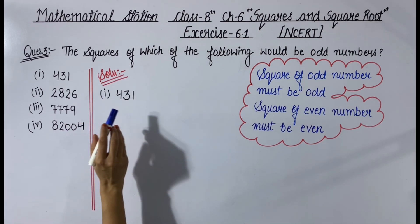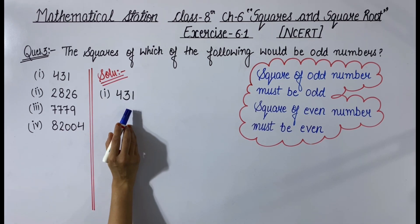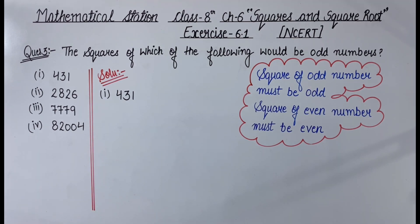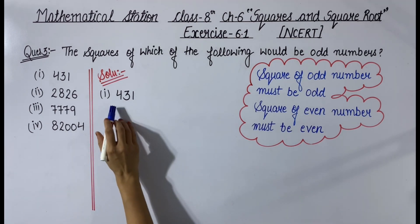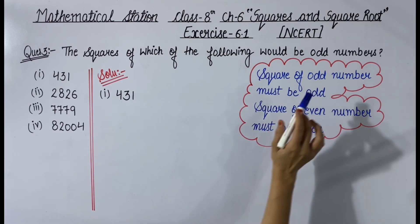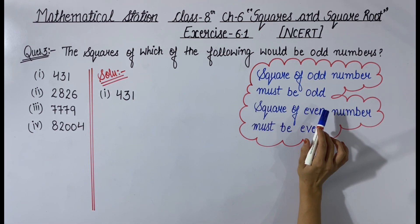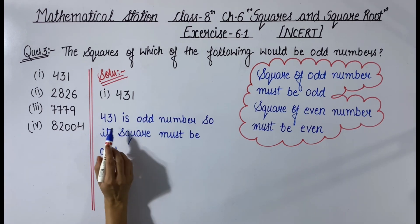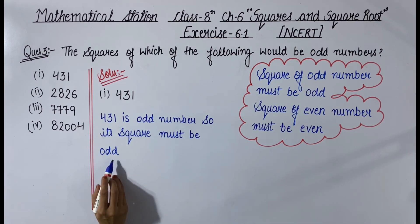Let's start the solution. First one is 431. The question asks if this number's square is odd. See, 431's last digit is 1, which is odd. So 431 is an odd number and we know that an odd number's square is odd. Therefore, 431 is odd so its square must be odd. Clear?